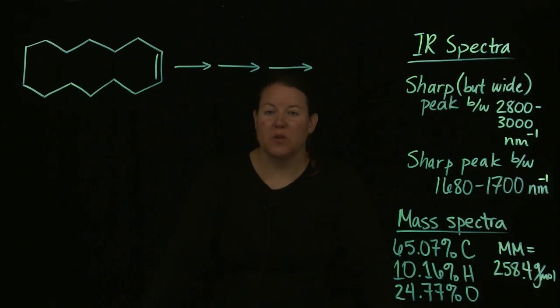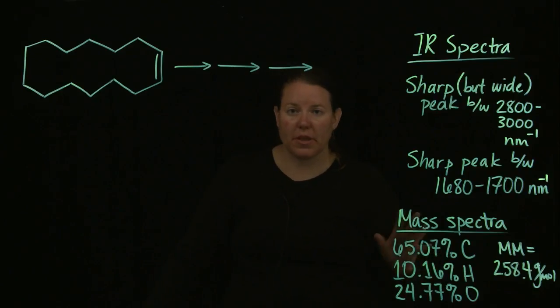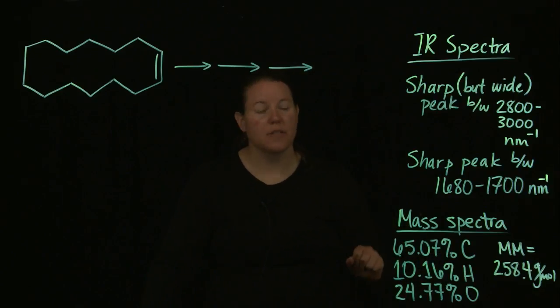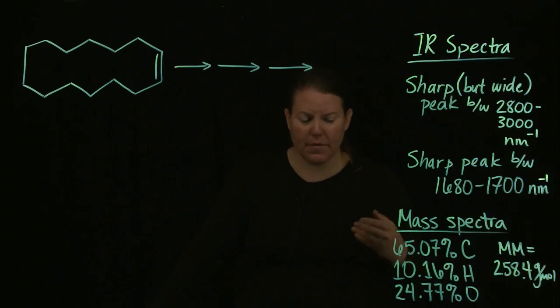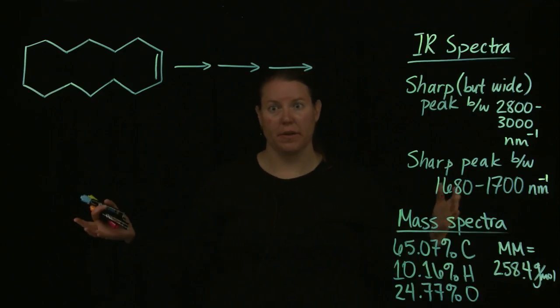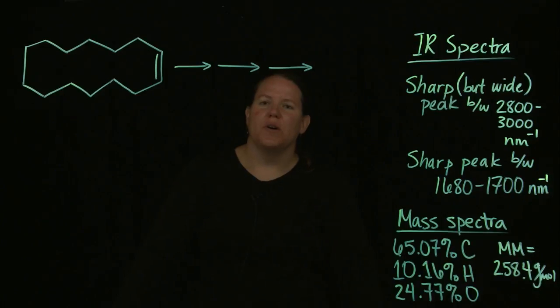When you're doing this, usually you get three spectral analyses. You get mass spectra, where you get the elemental analysis and you get the molar mass. You get an IR spectra, so that you can identify what functional groups are on there. And then you get an NMR, proton or carbon.